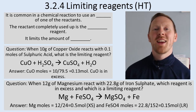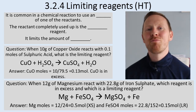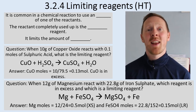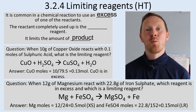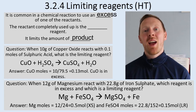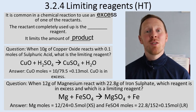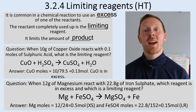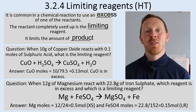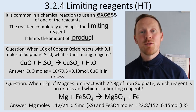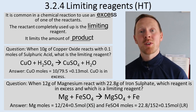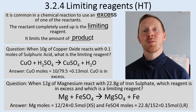3.2.4, higher tier limiting reagents. When you do a chemical reaction it's common to use an excess of one of the reactants to make sure the other one is completely used up. The reactant that runs out is called the limiting factor, and that limits the amount of product that's formed. If one reactant runs out, you know how much product you're going to get based on the moles of that reactant used up.